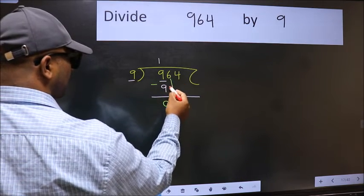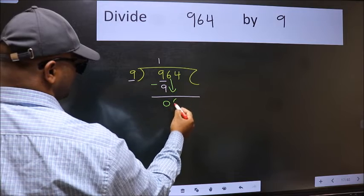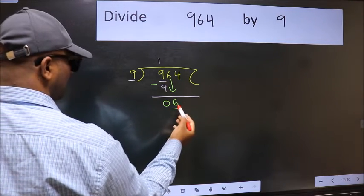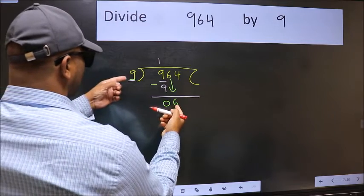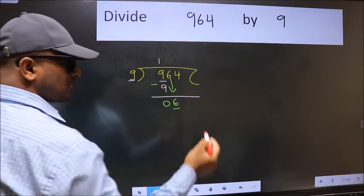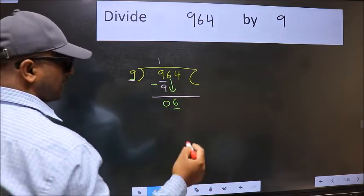After this, bring down the beside number. So 6 down. Now here we have 6 and here 9. 6 is smaller than 9, so we should bring down the second number.